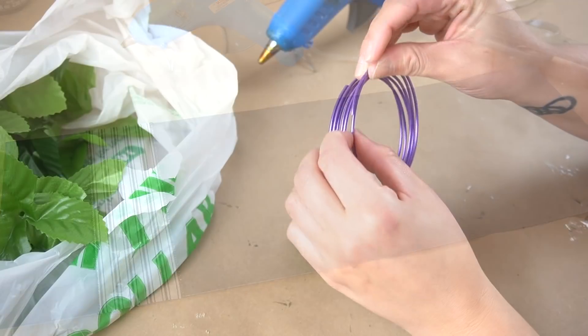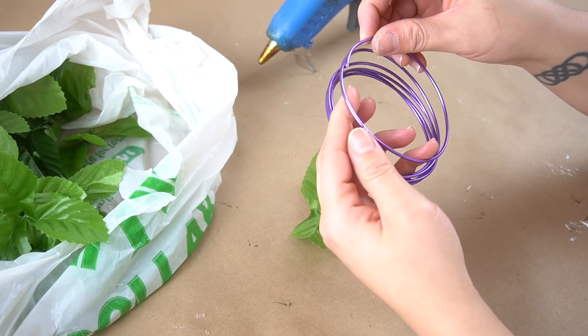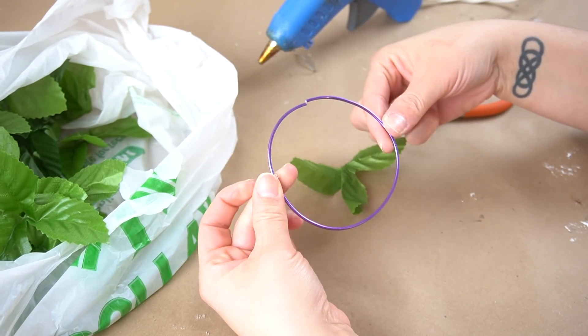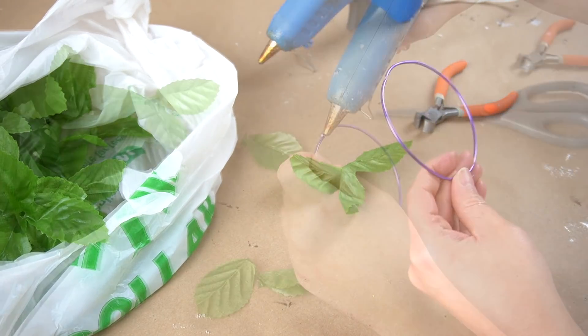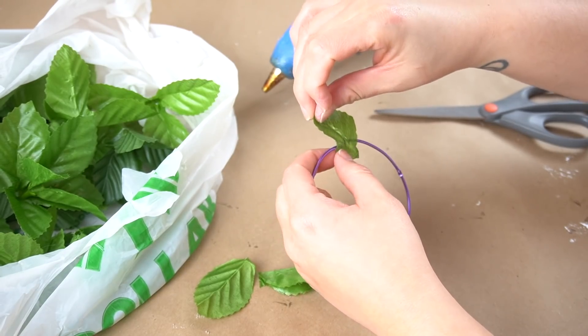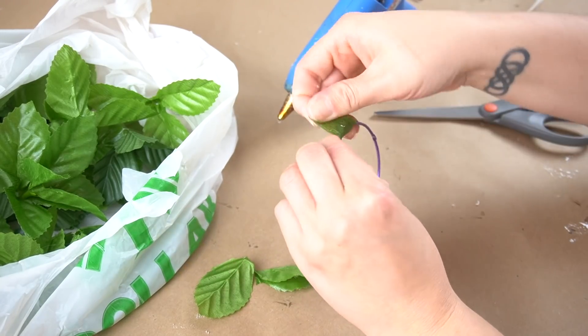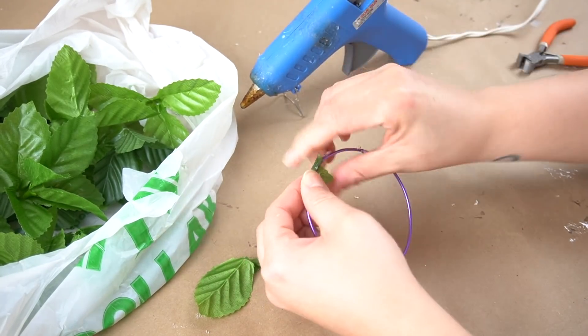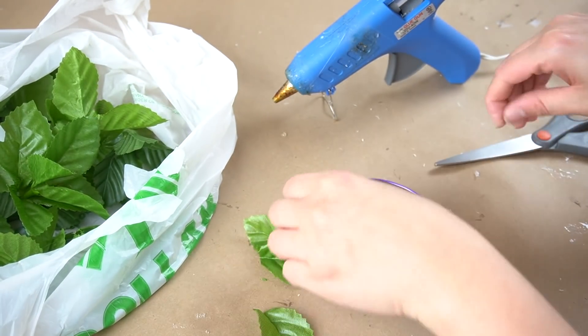I set that to the side, and I grabbed all of those little leaves that were left over from those Valentine's rose bushes, and I took this little piece of wire, also from Dollar Tree that I had from a previous project, and I cut it to make one solid ring. I took some hot glue and some leaves and began to wrap it all the way around.